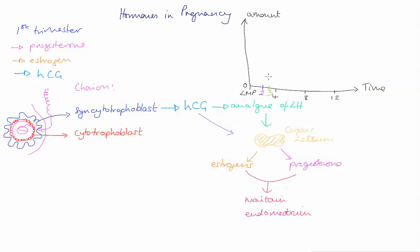And as soon as it's embedded, you start to see levels of HCG rise. And they rise really quickly until they reach a peak around week 9, when they start to fall away again.